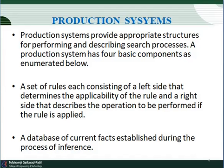Then we come upon production systems. The production system provides the appropriate structure for performing and describing search processes. In artificial intelligence, many problems involve initial states, final states, and searching — many AI problems are search problems. The production system not only facilitates the description of your search but also performs the search, providing the necessary structure.